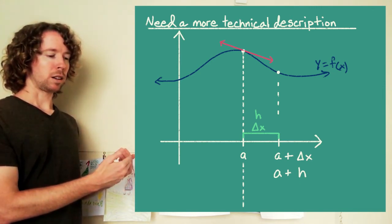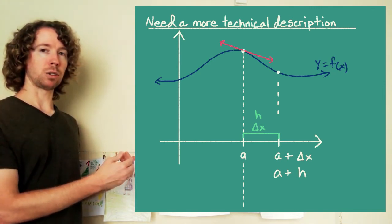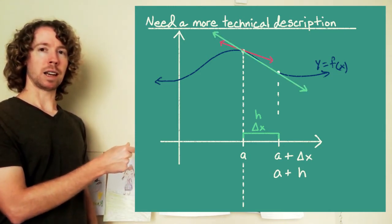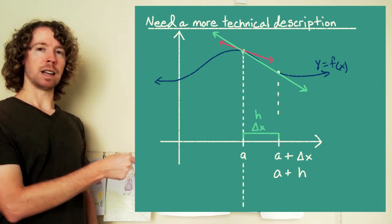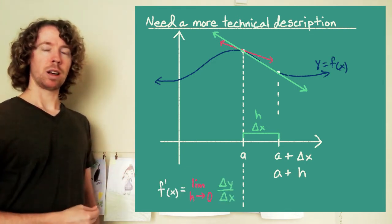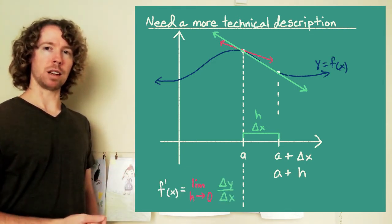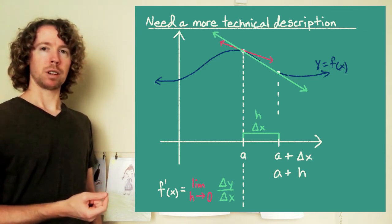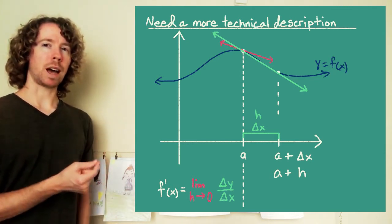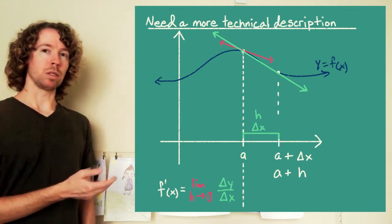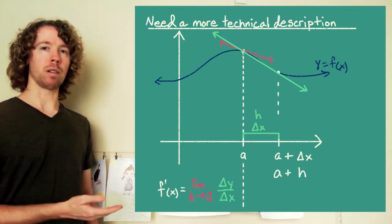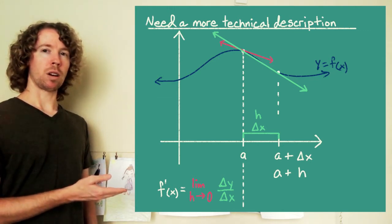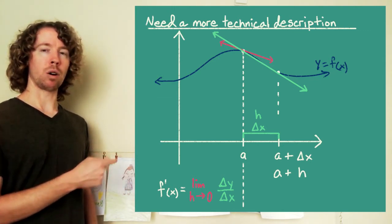If I then calculate the slope of the line that goes through the two points, slope of the secant line, and then I take the limit of that as delta x shrinks down to zero, that gives me the slope of the tangent line. That's the derivative at x equals a. That's what I'm after. So let's look at what's happening to the top part of this and the bottom part of this derivative.